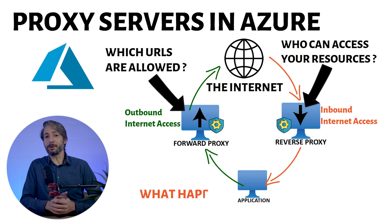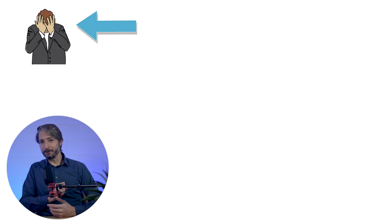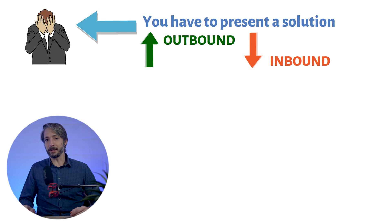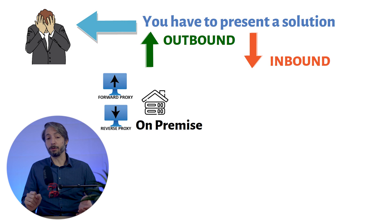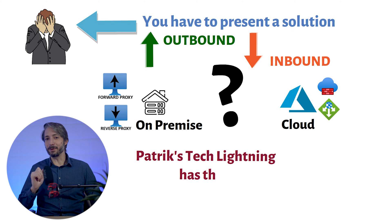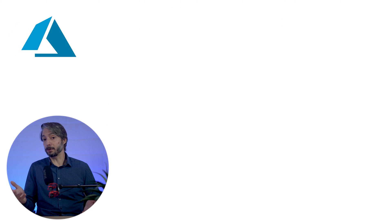Now, what happens if you are going to migrate to the public cloud? As an architect, you have to present a solution for both outbound and inbound internet traffic. It can get quite complicated because most companies already have a forward and a reverse proxy solution on-premise. So, should you use this existing on-premise solution for workloads placed in the cloud? That's exactly what we will answer with this video. First, we will have a look at the different services available in Azure for proxy functionality.